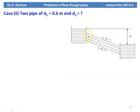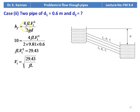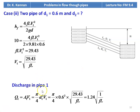When there are two parallel pipes of length L, diameters D1 and D2 with the head difference H = 10 m, for pipe 1: 10 = 4FL × V1² / (2 × 9.81 × 0.6), giving FLV1² = 29.43, so V1 = √(29.43/FL). Discharge in pipe 1: Q1 = π/4 × 0.6² × √(29.43/FL) = 1.24 × √(1/FL). For pipe 2: 10 = 4FL × V2² / (2 × 9.81 × D2), giving FLV2² = 49.05 × D2, so V2 = √(49.05 × D2/FL).